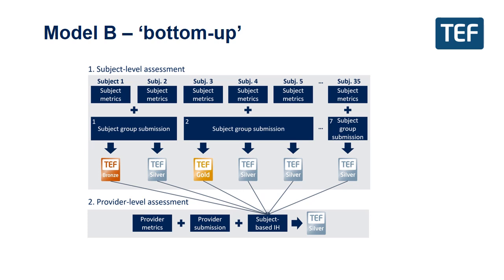Model B was the bottom-up approach, where subjects were assessed first. Ratings were generated for each subject using a group submission format, where a panel would review the subject metrics alongside a group submission that also included information about related subjects. Once all subject ratings were confirmed, they fed into the assessment of the university or college as a whole using an algorithmic approach called the subject-based initial hypothesis, which considered both the rating and the numbers of students in that subject. For more information about the two models, links to a webcast are provided at the end of this video.